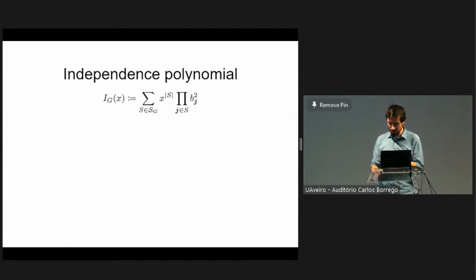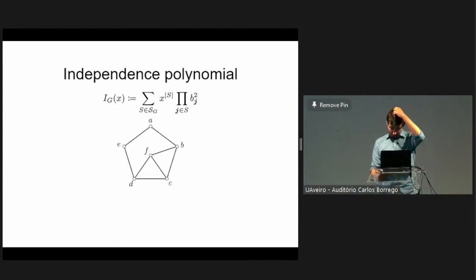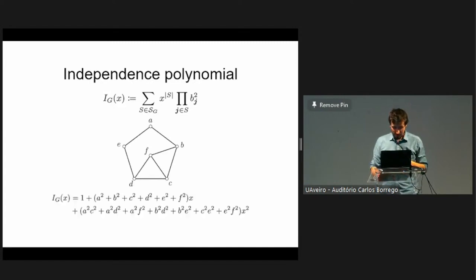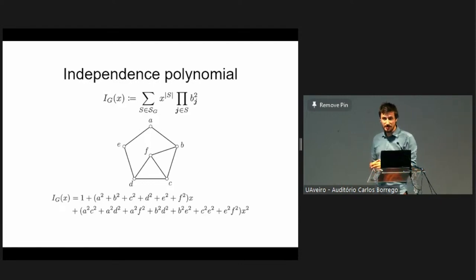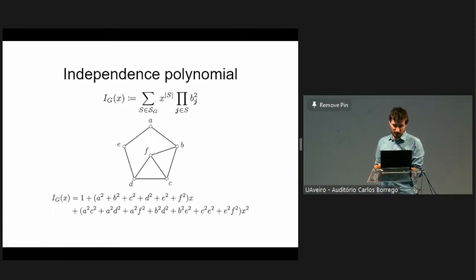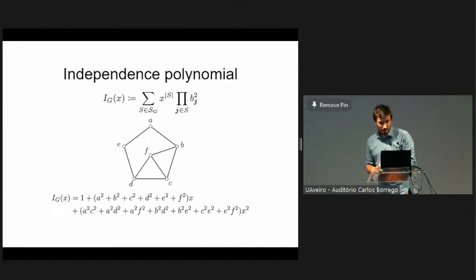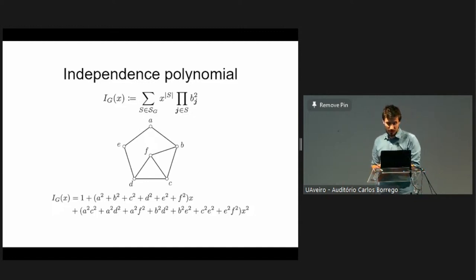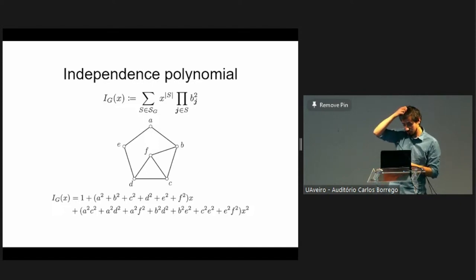Using independent sets, we define an independence polynomial: the sum of the product of coefficients for each vertex in each independent set, multiplied by x to the power of the size of that set. For a given graph, the zeroth order term is just 1 (the empty set), the first order terms give a² + b² + etc., and the second order terms sum over independent sets of size 2.